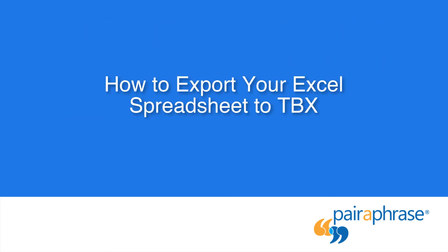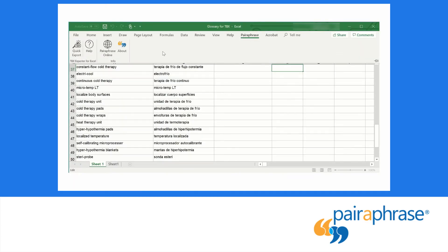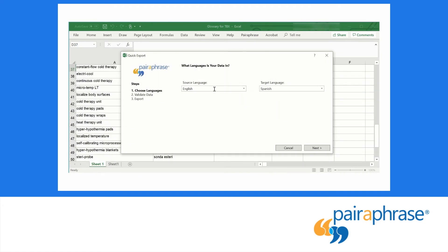After you download the add-in from the link we give you at the end of this video, simply follow these steps to export your spreadsheet to TBX. First, click Paraphrase in your Excel ribbon. Next, click Quick Export. Then choose a source language and target language. Click Next.